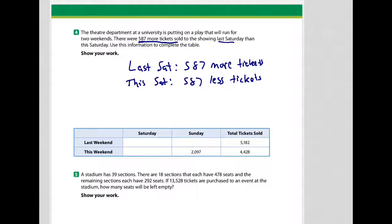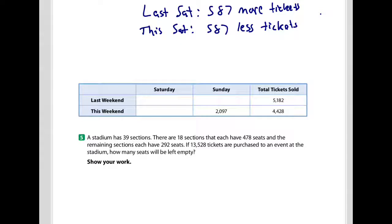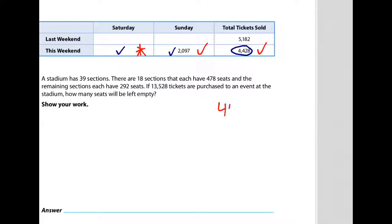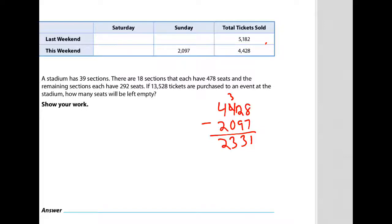Let's look at the table. This weekend has Saturday, Sunday, and total tickets. Last weekend only has total tickets shown. Since Saturday plus Sunday adds up to the total, that means total minus Saturday gives us Sunday. So I'm going to do 4,428 minus 2,097, which gives me 2,331. I'll fill that in the table.